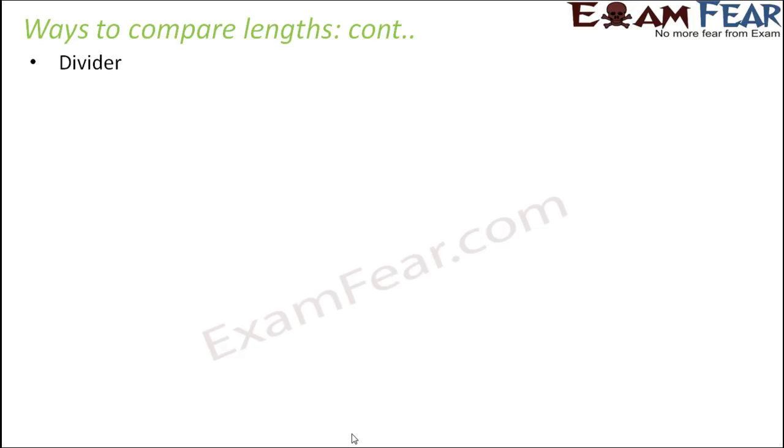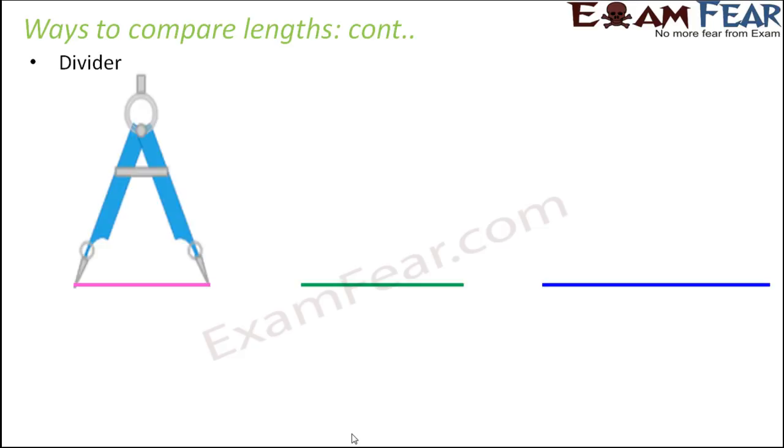I'm sure you would have seen a divider in your geometry box. This is how it looks. It has two pointed ends like this, and these two arms of the divider are flexible. So you can open them, you can close them. When you open them it gets widened, when you close them it gets narrow.